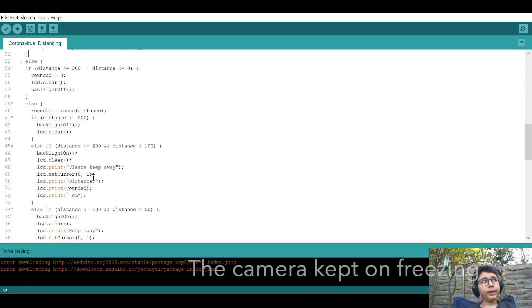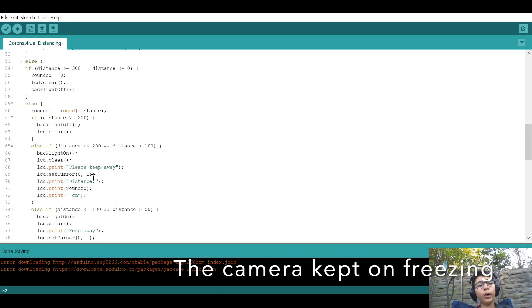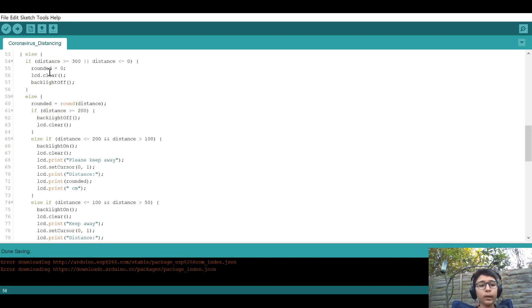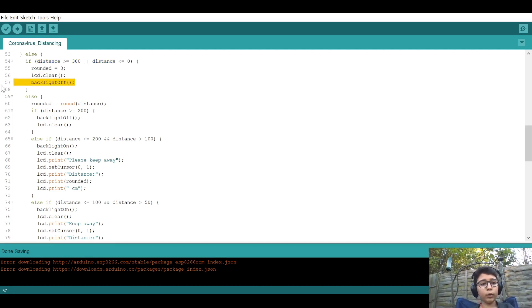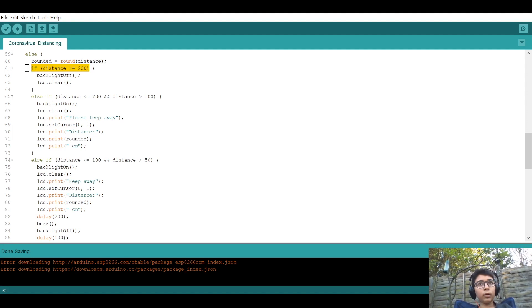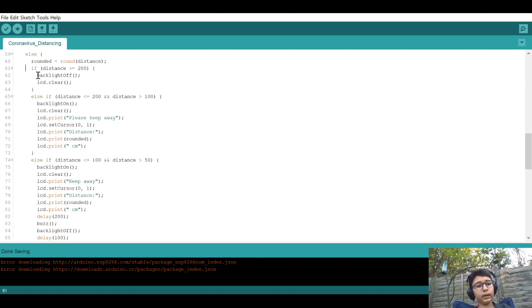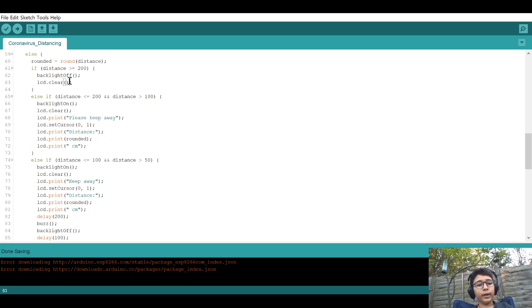If the Arduino is not in the measuring mode, then it is checked if the sensor is out of range. If it is out of range, the LCD is cleared and the backlight is turned off. If the distance is more than or equals to 200 centimeters, which is two meters, the backlight is turned off and the LCD is cleared.